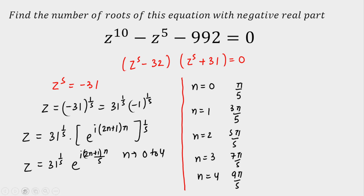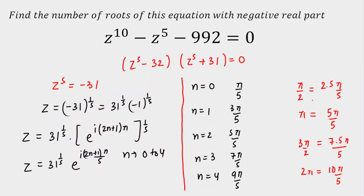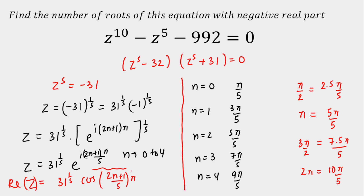Again I write the angles in units of π/5, with quadrant boundaries at 2.5π/5 (90°), 5π/5 (180°), 7.5π/5 (270°), and 10π/5 (360°). The real part of z is 31^(1/5) times cos((2n+1)π/5), and we need this to be negative, which requires the angle to be in the second or third quadrant.